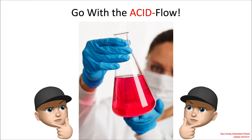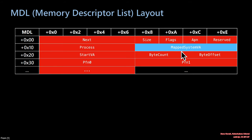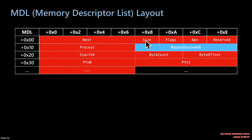Let's go with the ACID flow. We described the MDL and said the attacker can control all of this content except the mapped system VA. All of this is going to be fed from the untrusted normal kernel into the secure kernel. The relevant bit here is that this structure takes at a minimum hex 30 worth of space in order to put all of these fields. The PFN array after it is going to be variable length, but at a minimum you need at least hex 30 bytes in order to allocate space for all of these fields in the structure.